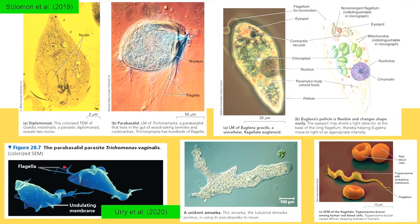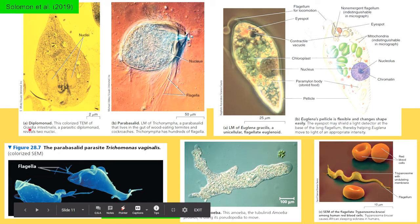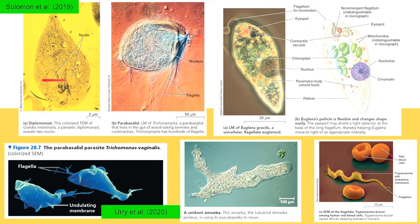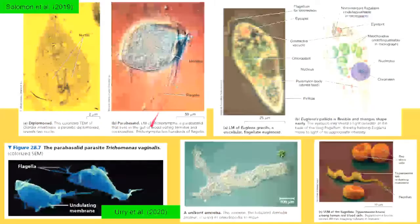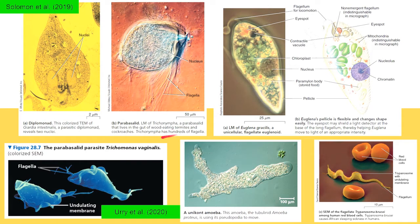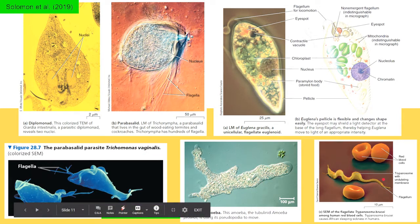These are images of representative organisms under Kingdom Protista. You have Giardia intestinalis, a parasitic diplomonad that reveals having two nuclei, as supported by the two endosymbiotic events. Then Trichonympha, a parabasalid that lives in the gut of termites — you can see hundreds of its flagella for locomotion. Then Euglena, which has a nucleolus, nucleus, chloroplast, but also a flagellum for locomotion. Another parabasalid parasite, Trichomonas vaginalis, then amoeba, and Trypanosoma, which is actually a cause of African sleeping sickness in humans.